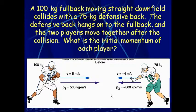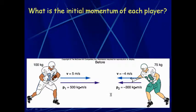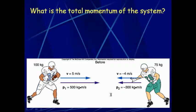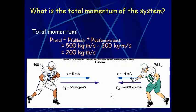If asked for the total momentum of the system, you add them: 500 plus negative 300 equals 200 kilogram meters per second. Be careful with signs — one player is going one direction, the other is going the opposite direction, so you subtract. If they were going in the same direction you would add.